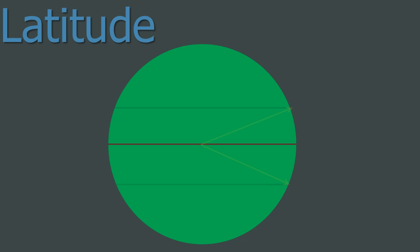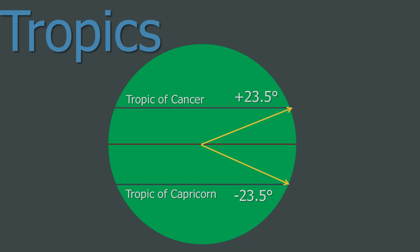Lines of latitude are parallel lines that circle the Earth from east to west. They are parallel with the equator as well as each other. The tropics are lines of latitude plus and minus 23.5 degrees from the equator. The Tropic of Cancer is plus 23.5 degrees from the equator, whereas the Tropic of Capricorn is minus 23.5. It's important that you remember the plus and minus 23.5 degrees.